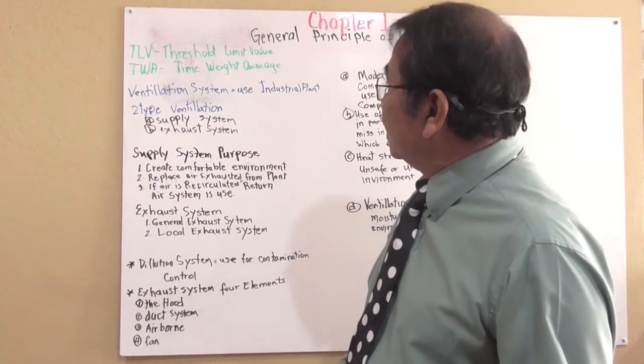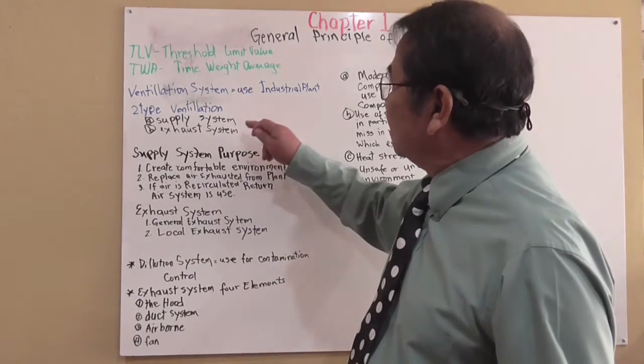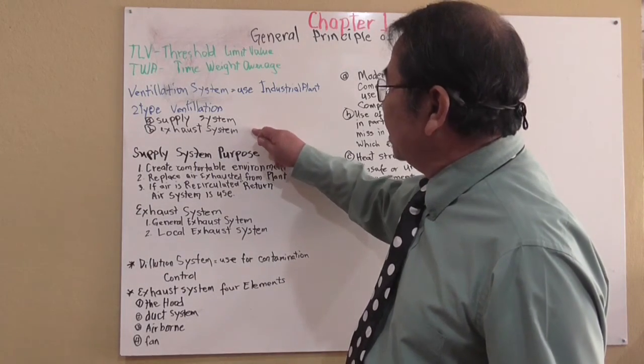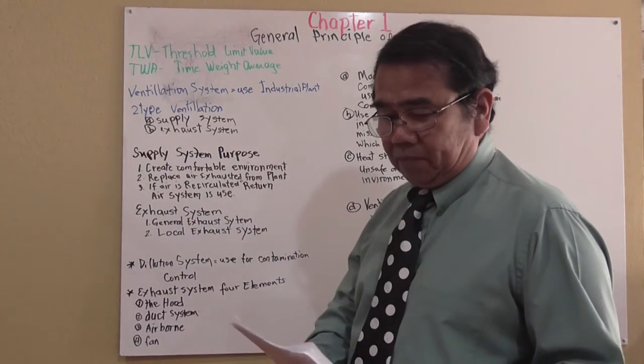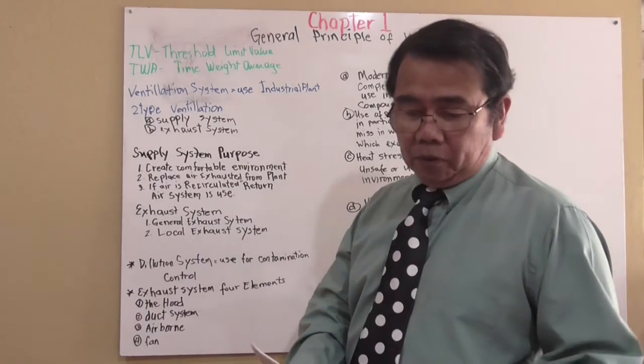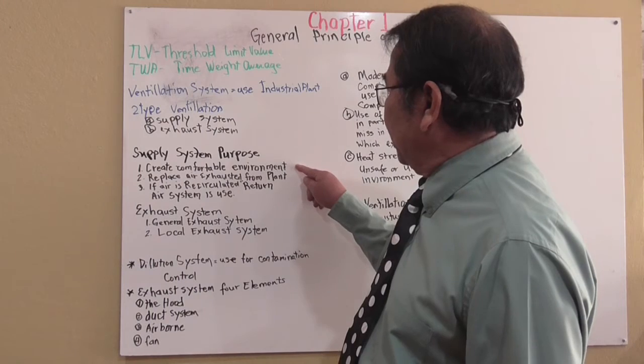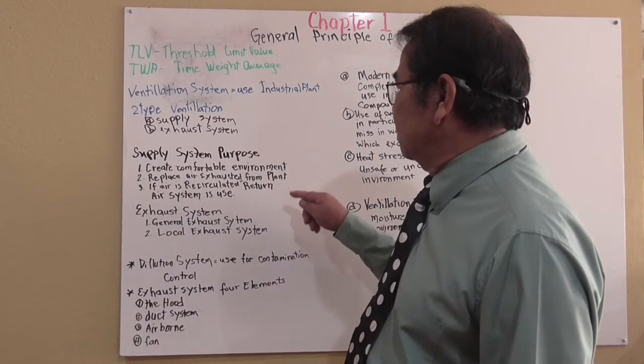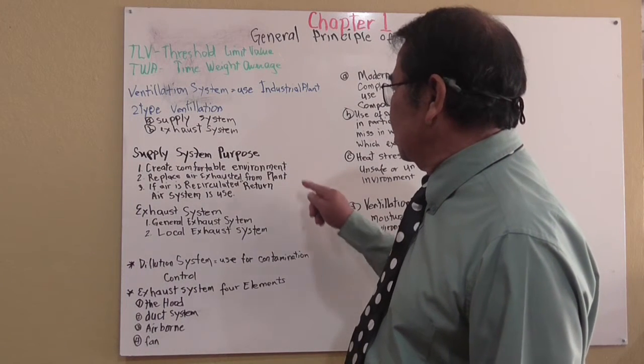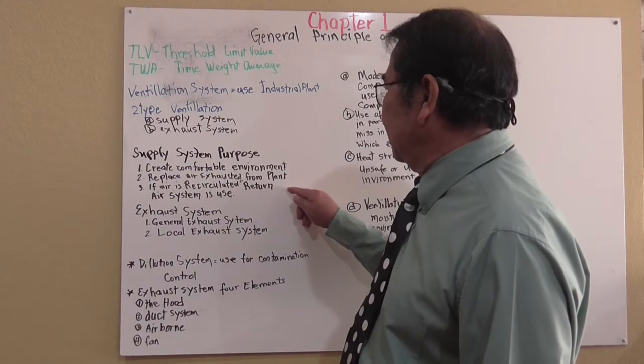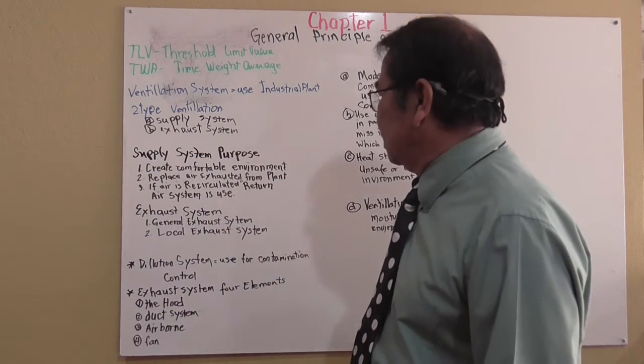We've got a type of ventilation: supply ventilation and exhaust ventilation. Supply is to: one, create comfortable environment; two, replace air exhausted from the plant; and three, if air is recirculated, retard air system issues.